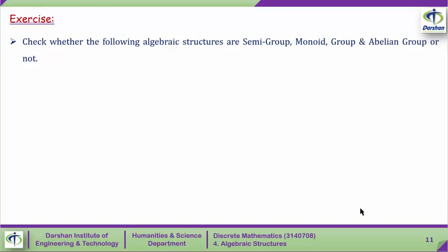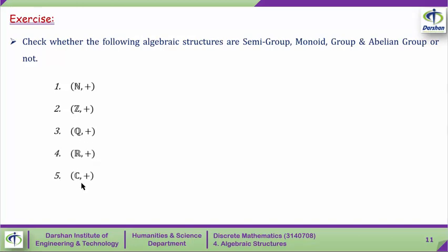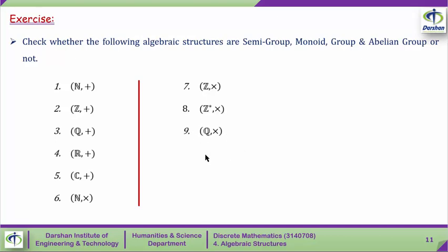You have to do some exercises. Check whether the following algebraic structures are semi-group, monoid, group, abelian group, or not: (1) natural numbers with addition, (2) integers with addition, (3) rational numbers with addition, (4) real numbers with addition, (5) complex numbers with addition, (6) natural numbers with multiplication, (7) integers with multiplication, (8) invertible elements of Z (i.e., Z* with multiplication), (9) Q with multiplication, (10) Q\{0} with multiplication, (11) R with multiplication, (12) R\{0} with multiplication.